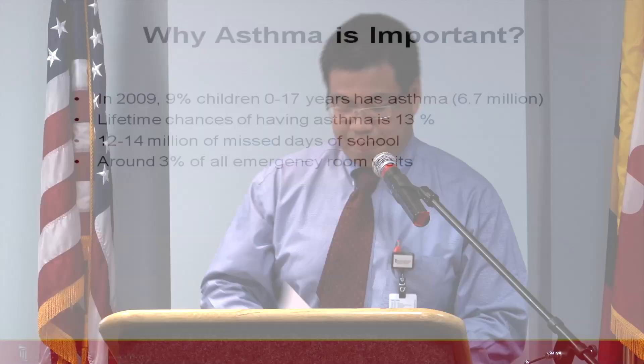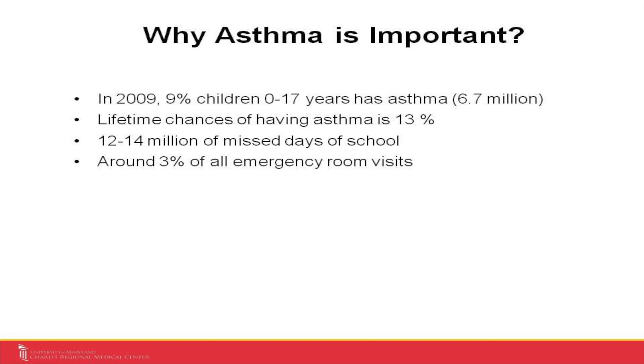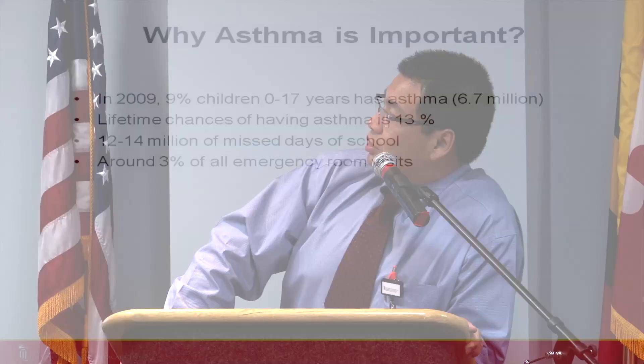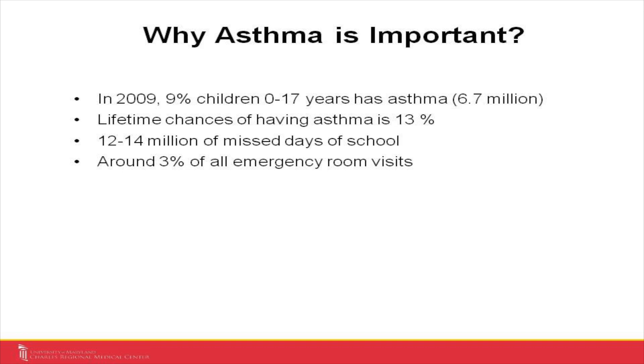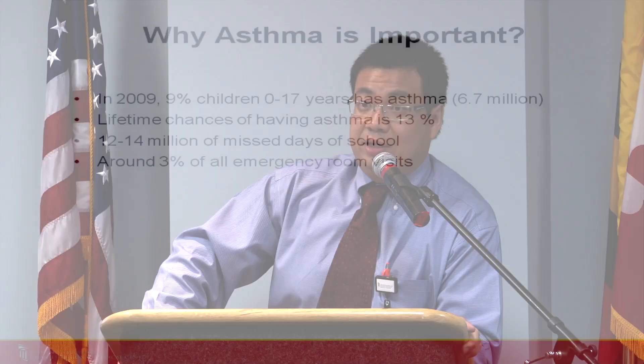Why is asthma important? In 2009, 9% of children ages 0 to 17 had asthma — that's close to 6.7 million. The lifetime chance of having asthma is 13%. There are 12 to 14 million lost days of school. Around 3% of all emergency room visits are asthma-related, and that is probably a very low estimate. Mortality from asthma — dying of asthma — is rare, only about one to two in 100,000, but it's still there.